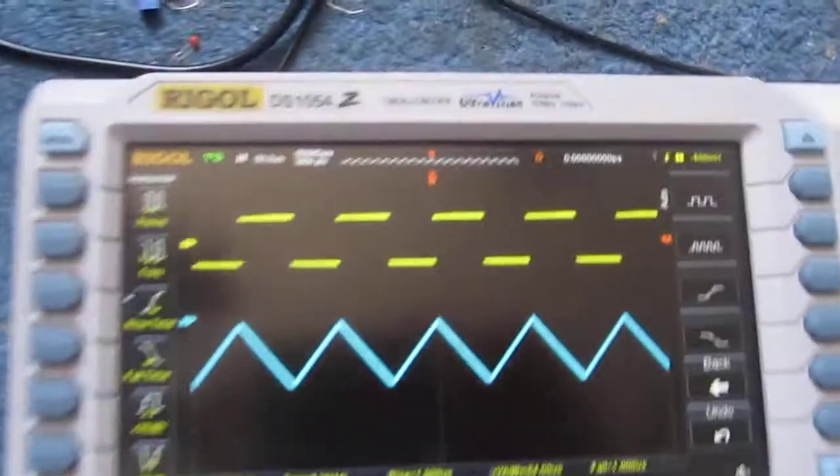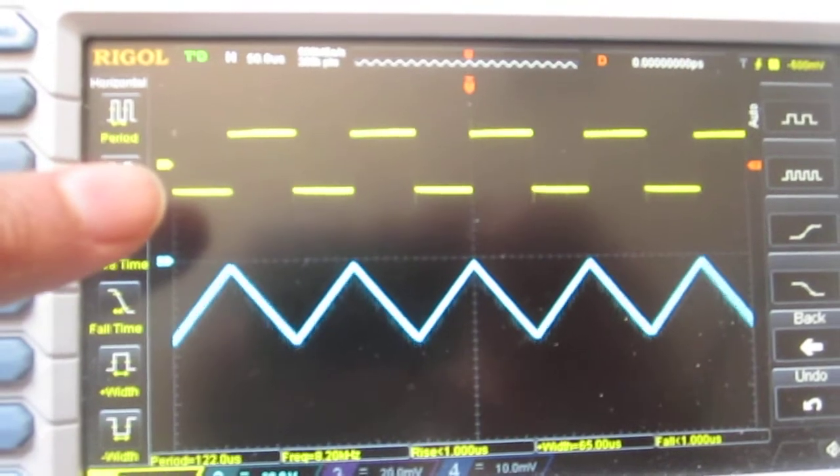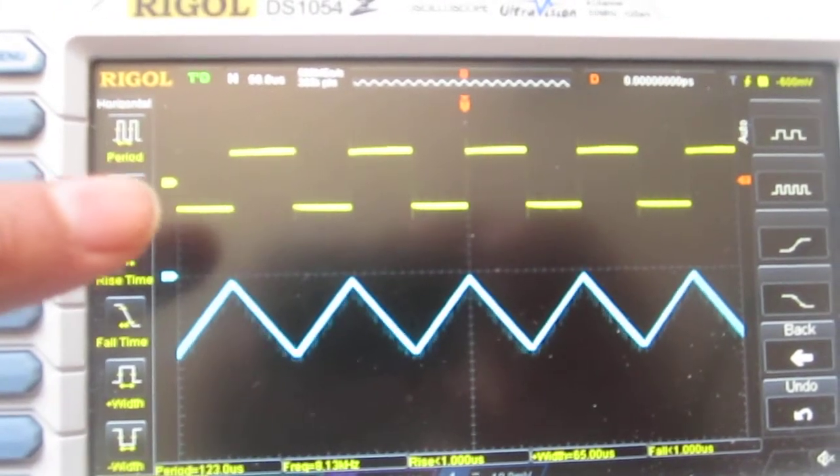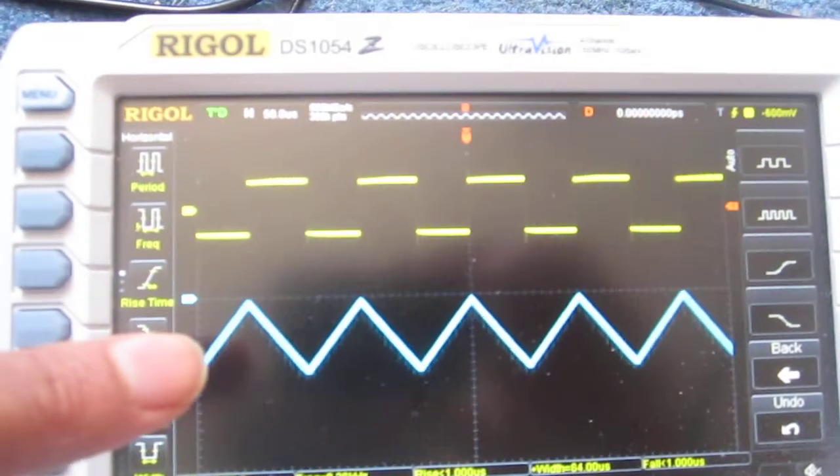So to see how this looks on an oscilloscope, I have it right here. The yellow signal, which is the square wave, is the input, and at the output is the blue signal, which is a triangle wave.